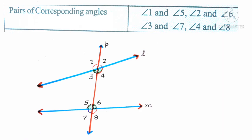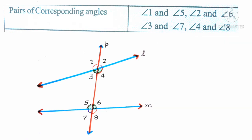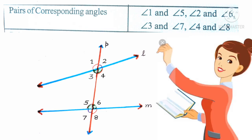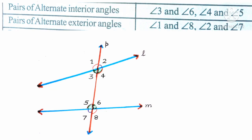Let us see to the left of the transversal. Angle 1 and angle 5 are corresponding angles. Angle 3 and angle 7 are also corresponding angles because they are in corresponding position and to the same side of the transversal but they have different vertices.